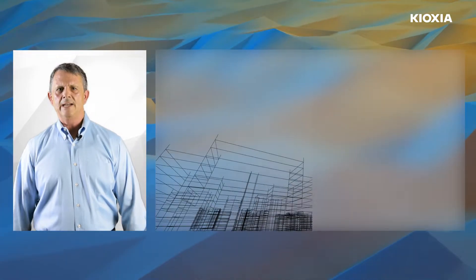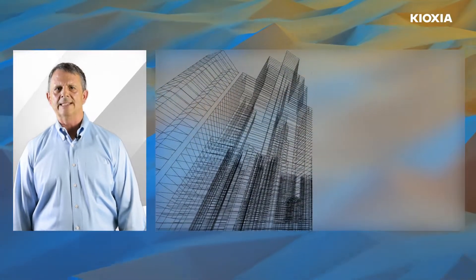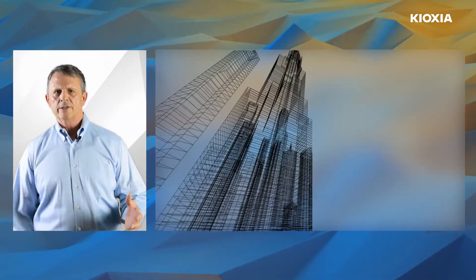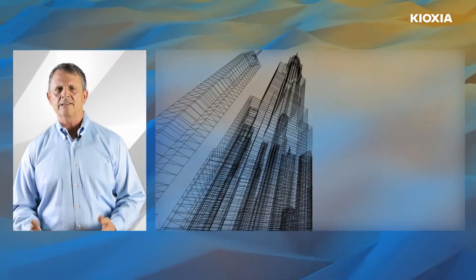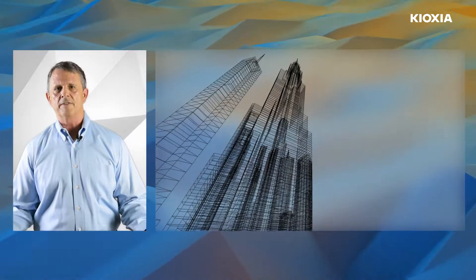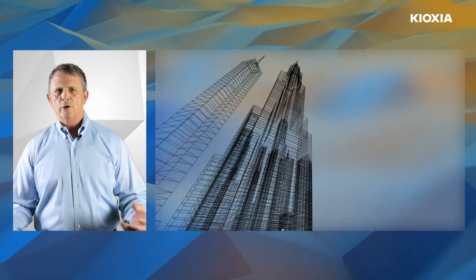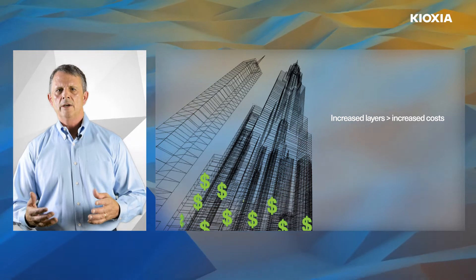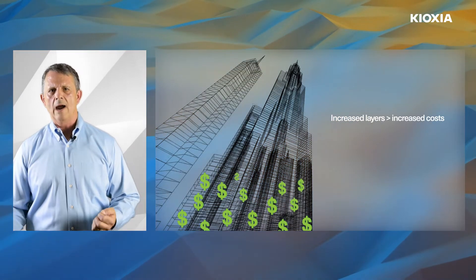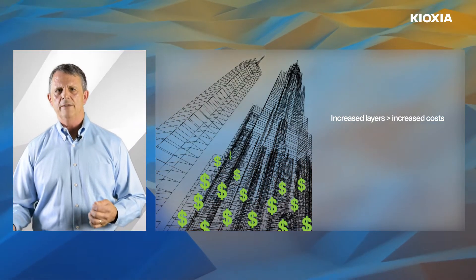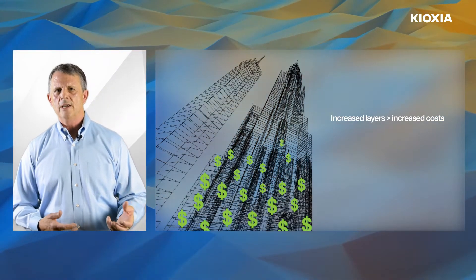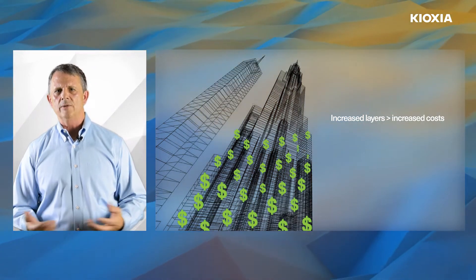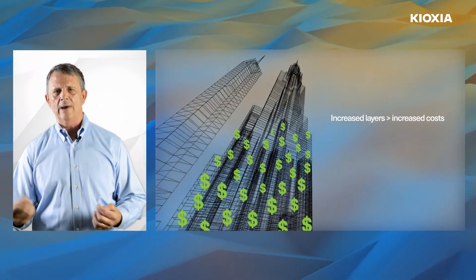Think of designing 3D flash memory like designing a high-rise building. You build to accommodate a particular capacity — let's say a number of offices. Your main constraint would be the plot of land that you're building on. So once you figure out your XY, if additional capacity is needed, you would add floors vertically. But for every floor that you add, you add costs.